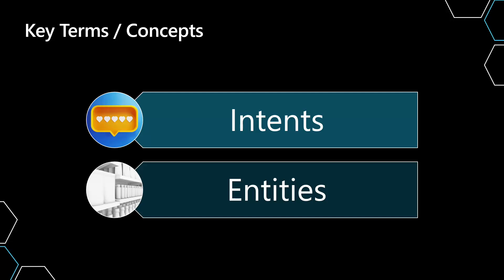One is intents, and the other is entities. An intent is — think of it as what you intend, or an action that you're looking to do, and the overall statement of what you're intending. Entities are more of the additional pieces of information that you are passing when you are saying something. We will explore this further with some examples.